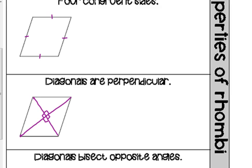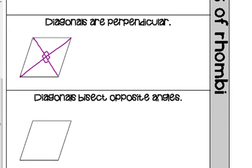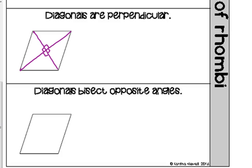If you're asked about one of the sides, you can use properties of right triangles. In addition to being perpendicular and bisecting each other, the diagonals bisect opposite angles. So if the angle at the top is 60 degrees, when the diagonal comes in, it cuts it into two equal 30-degree angles.